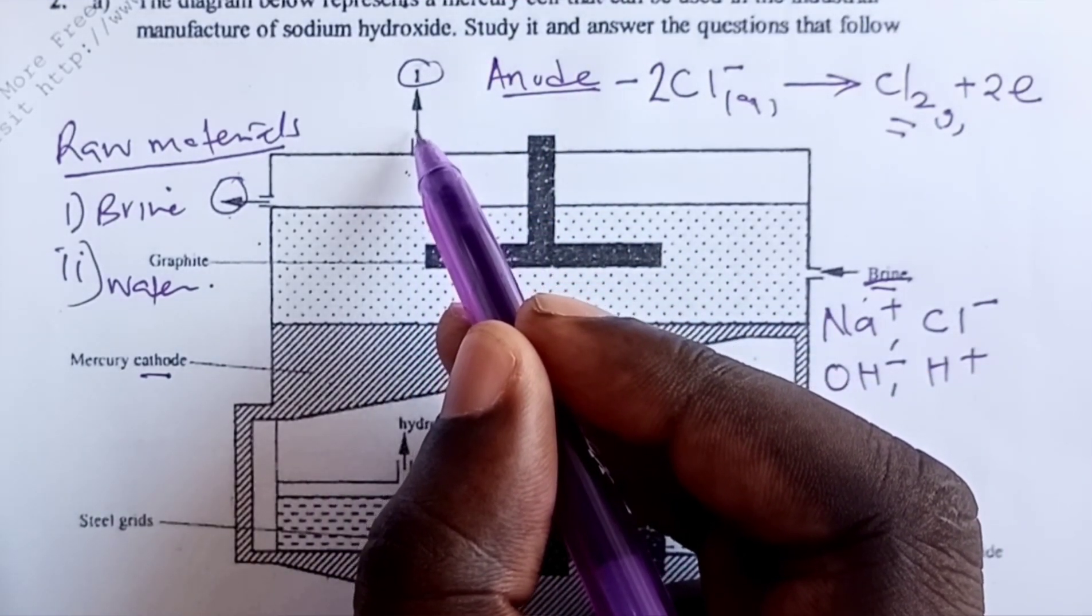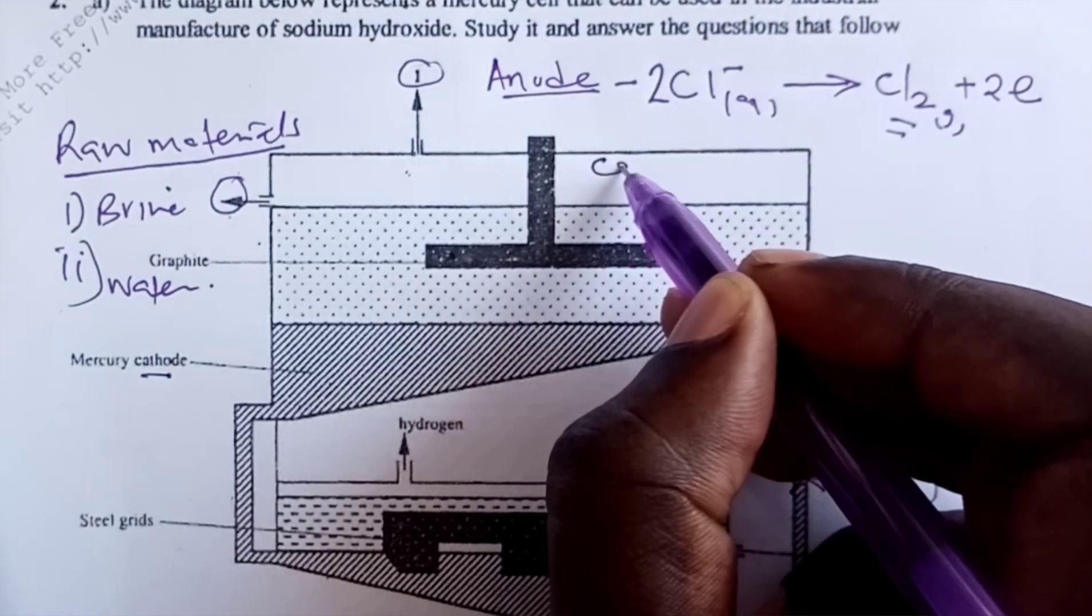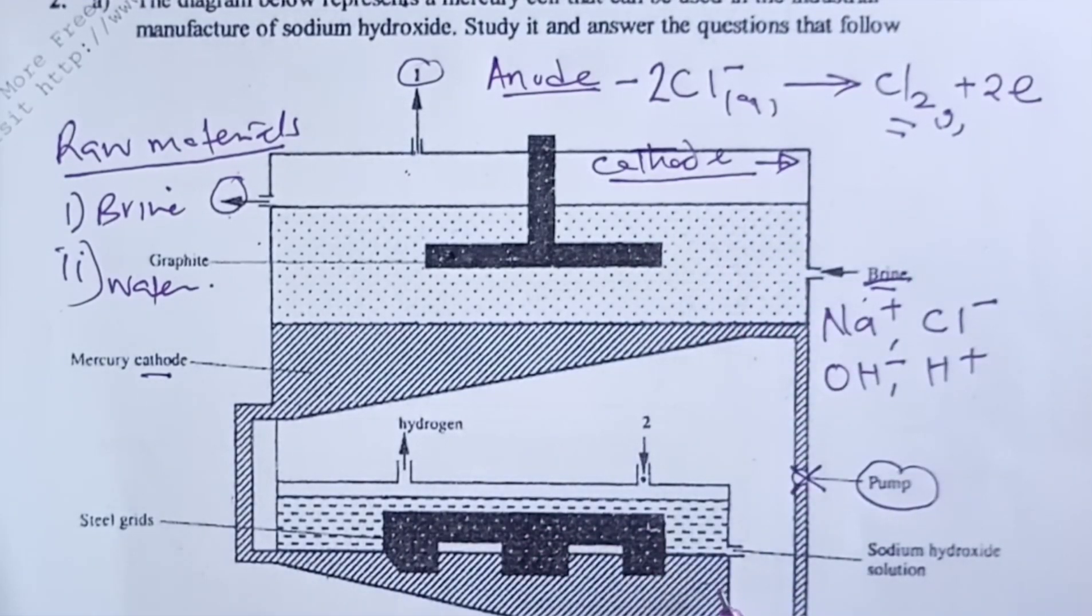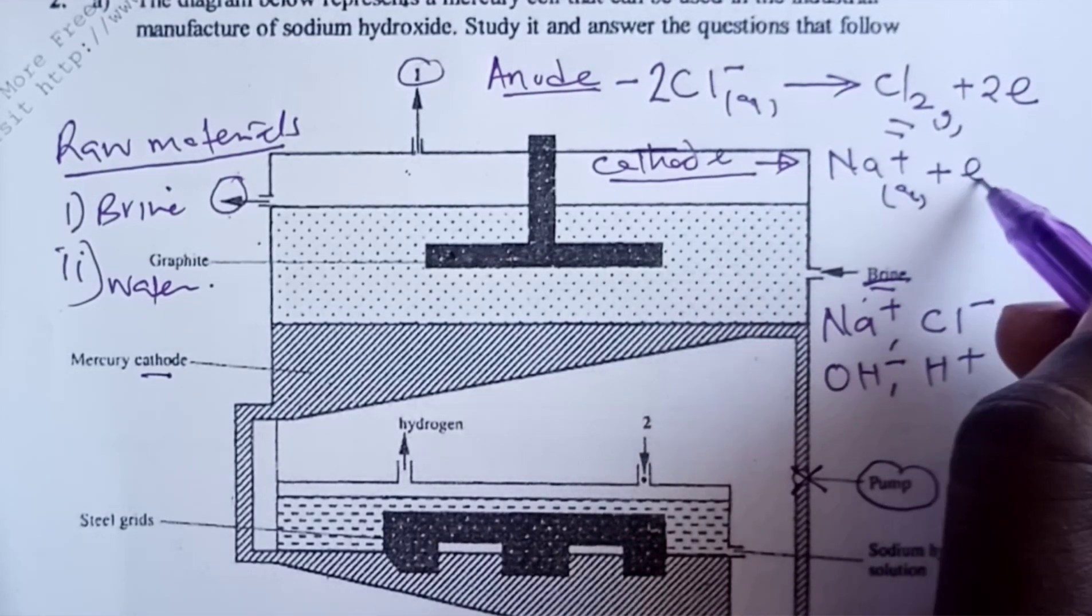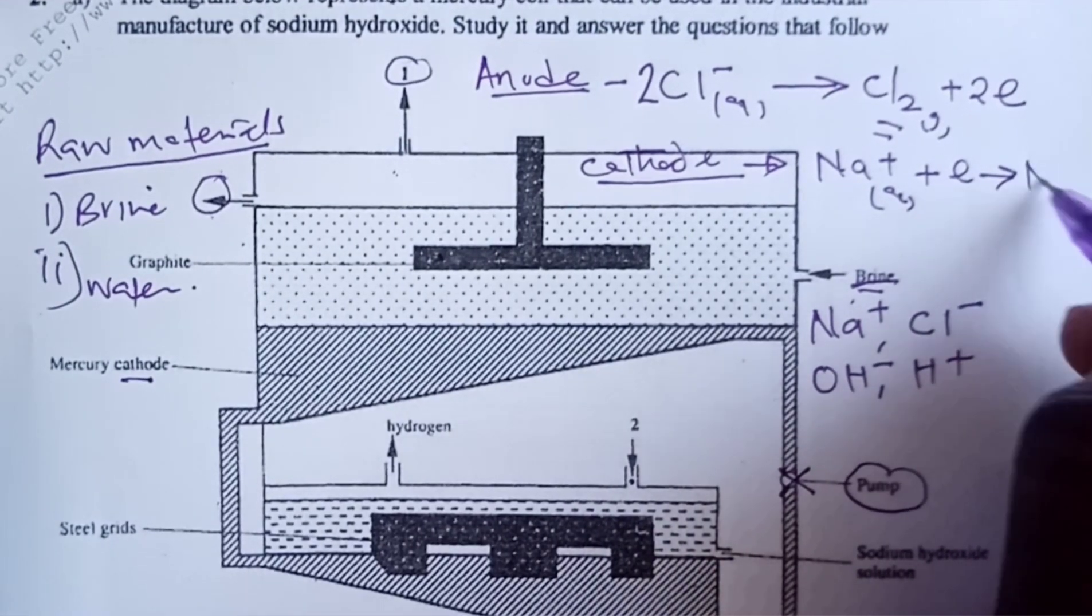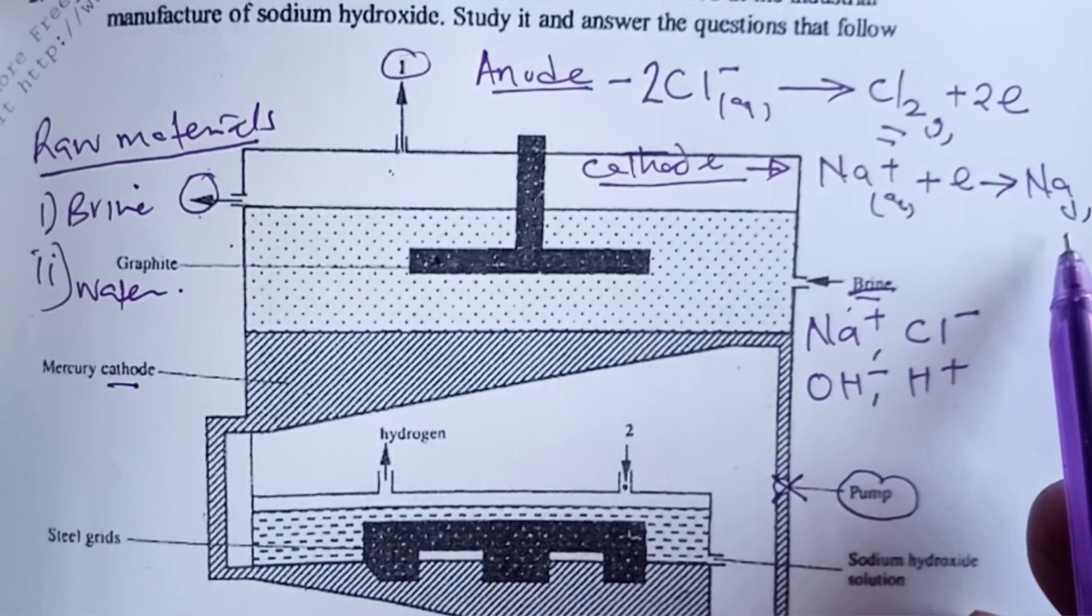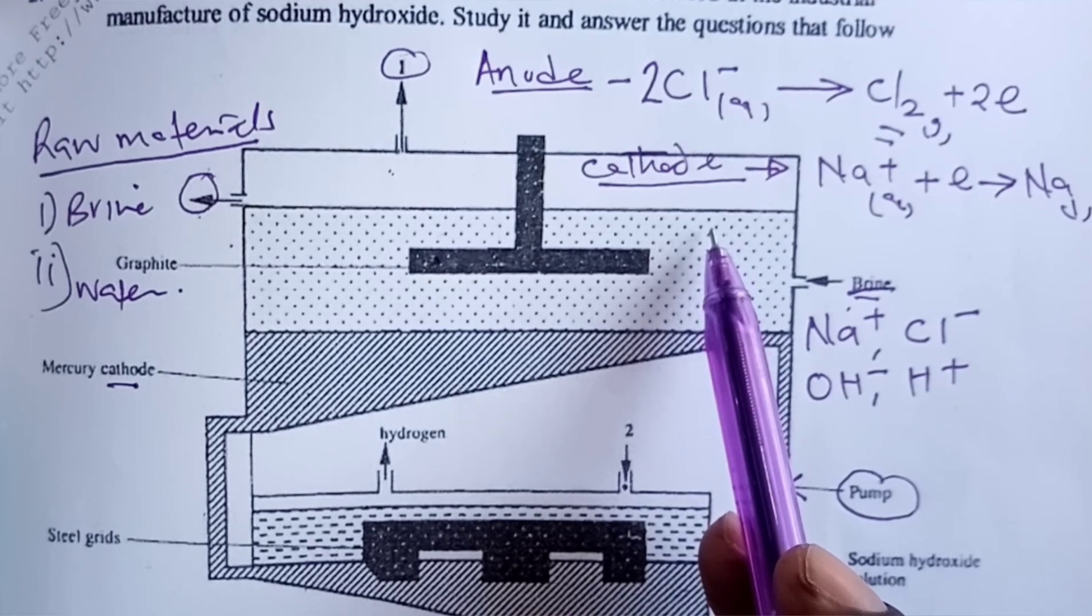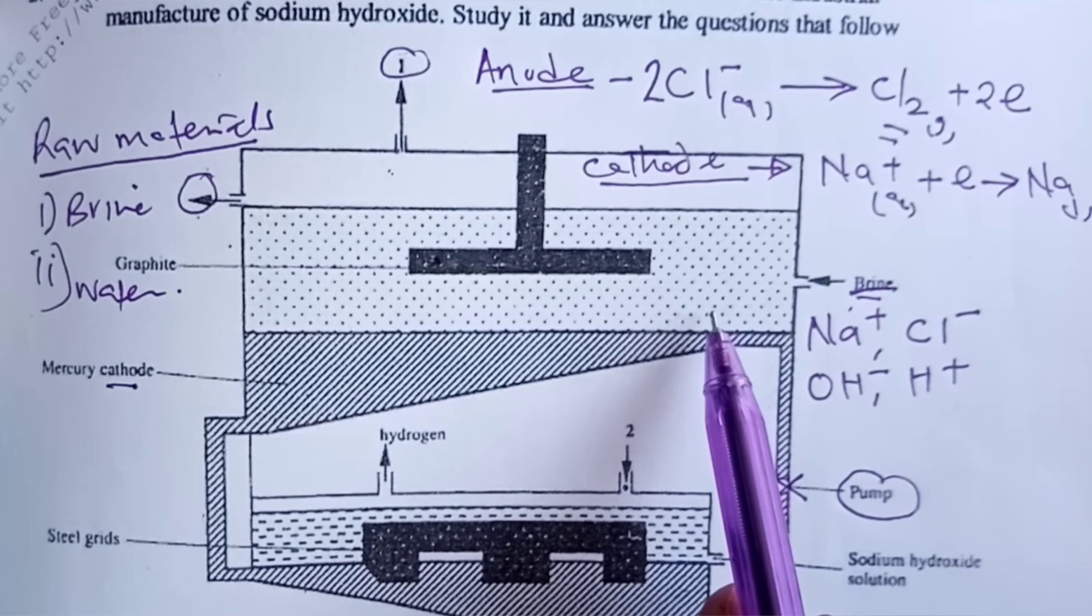What comes out here is chlorine gas. Moving on to the cathode, because we are using a special material which is mercury, we shall then discharge sodium ions through gain of one mole of electrons. Once this sodium has been formed at the mercury cathode, the sodium combines with mercury to form sodium mercury amalgam, which is represented by the equation below.